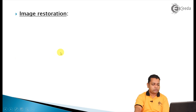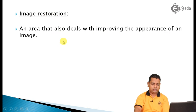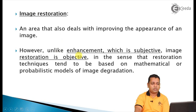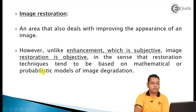After image filtering and enhancement, the third fundamental step is image restoration — an area that also deals with improving the appearance of an image. Unlike image enhancement, which is subjective (with the viewer as ultimate judge), image restoration is objective in the sense that restoration techniques tend to be based on mathematical or probabilistic models of image degradation.